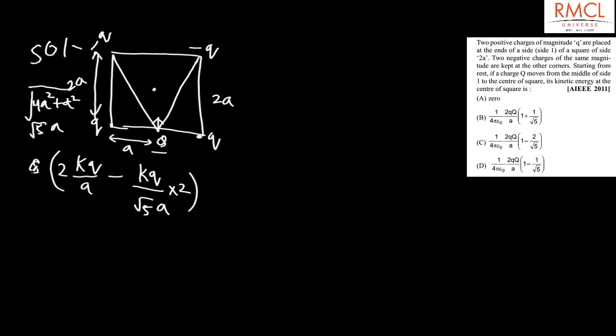When the charge goes to the center, the net potential there becomes zero because there are two negative charges and two positive charges all at the same distance from the center, so they cancel. Therefore the potential energy at the center is zero. Since the charge starts from rest, the initial kinetic energy is zero. The change in potential energy equals the final kinetic energy we need to find.